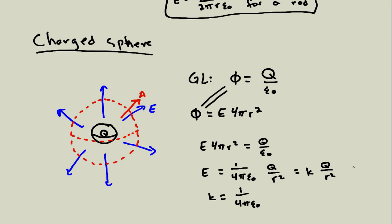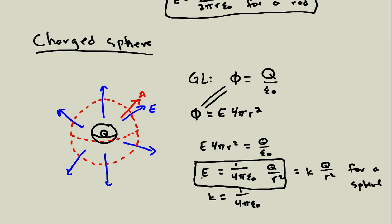I claimed that k equals 1 over 4π epsilon naught when I first introduced epsilon naught, and now we can see how that comes about. Gauss's law gives us this connection between a spherical charge distribution — like a point charge — and k. We've now solved the electric field in three symmetrical cases just by using symmetry and Gauss's law, which hopefully convinces you that making an argument based on symmetry gives us a lot of power in solving problems without having to do a lot of really difficult math.